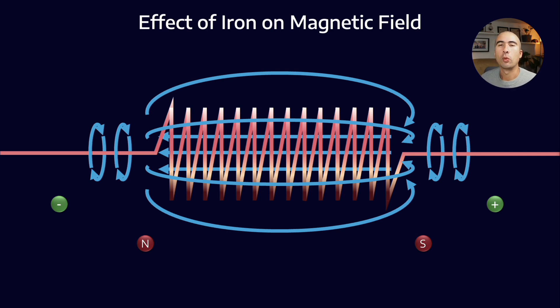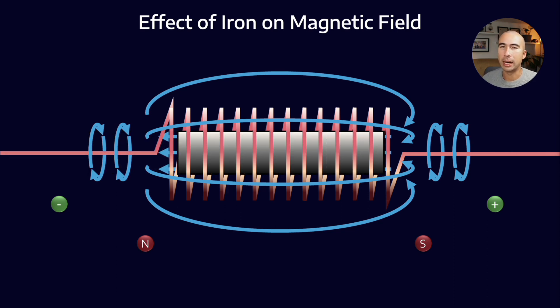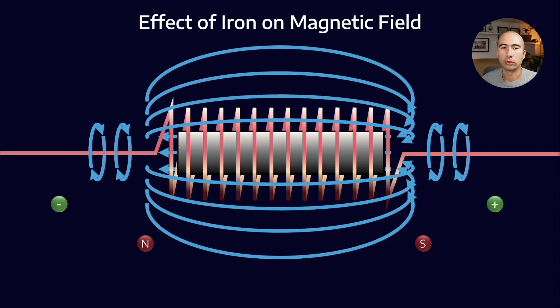However, we can change the core, and this will change the magnetic field strength. If we put an iron bar through the middle, that will increase the magnetic field strength.